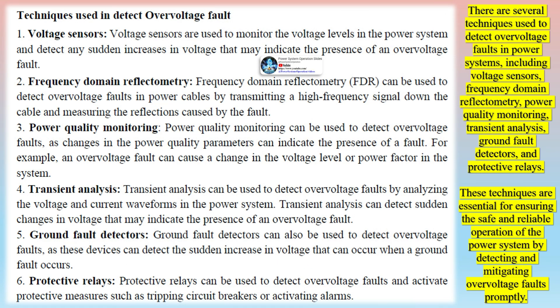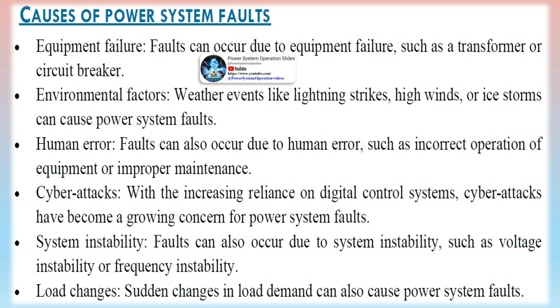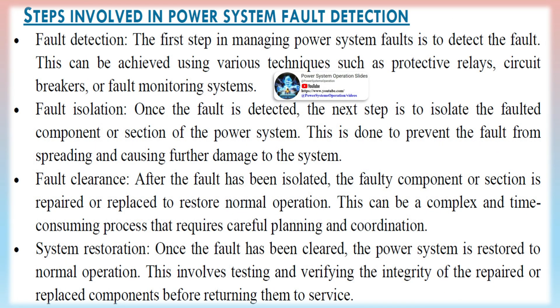The steps involved in power system fault detection and management are: fault detection, using techniques such as protective relays, circuit breakers, or fault monitoring systems; fault isolation, to prevent the fault from spreading and causing further damage; fault clearance, where the faulty component or section is repaired or replaced to restore normal operation, which can be complex and time-consuming; system restoration, involving testing and verifying the integrity of repaired or replaced components before returning them to service; and post-fault analysis, to determine the root cause and identify improvements to prevent similar faults in the future.